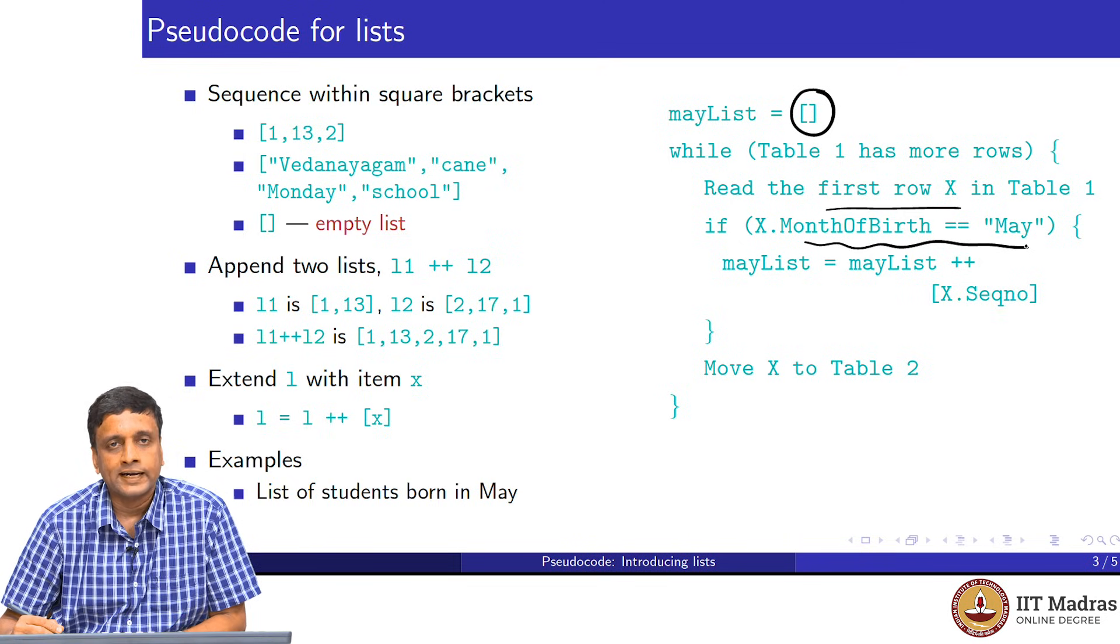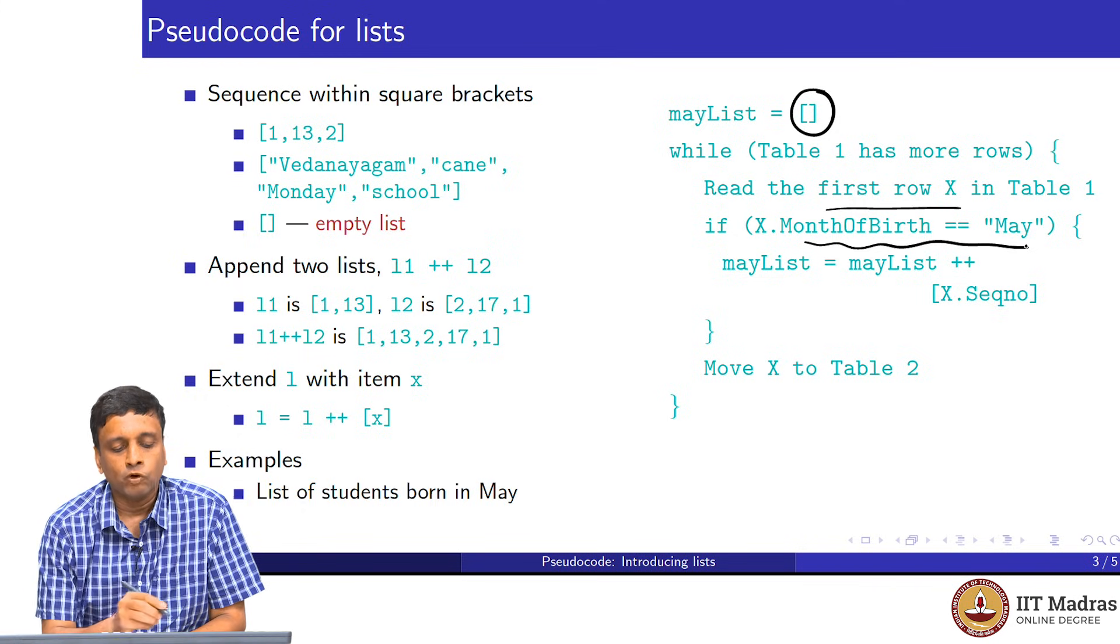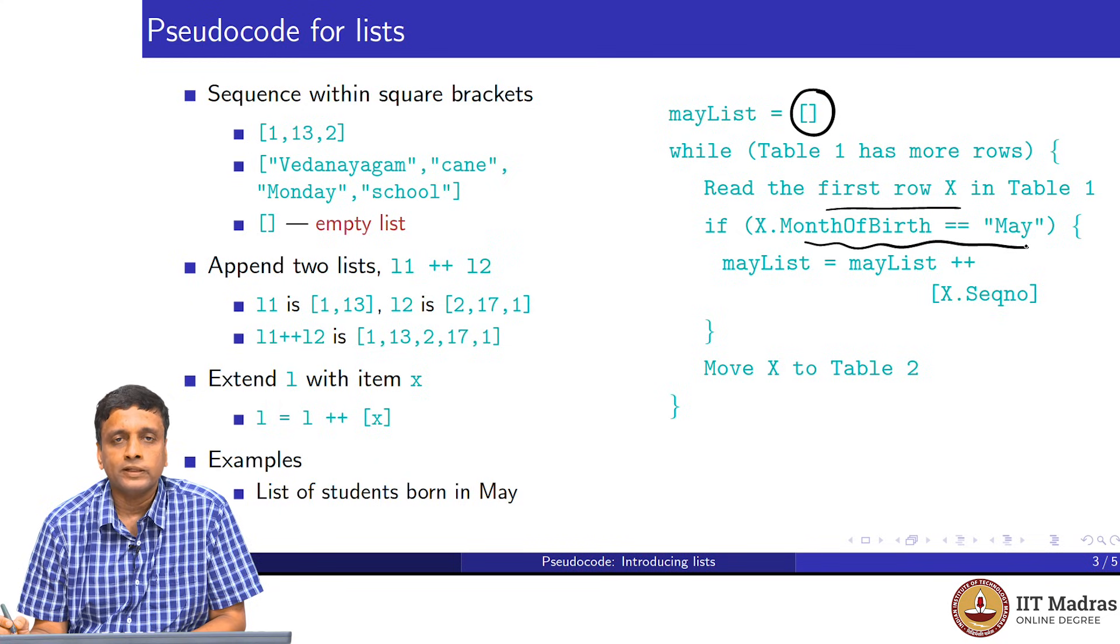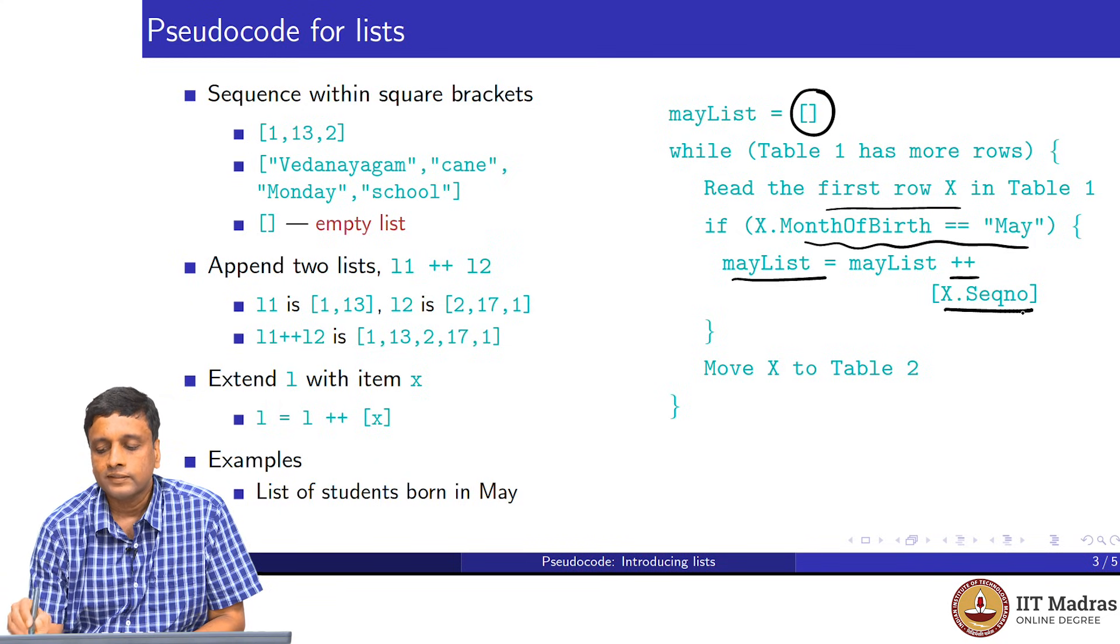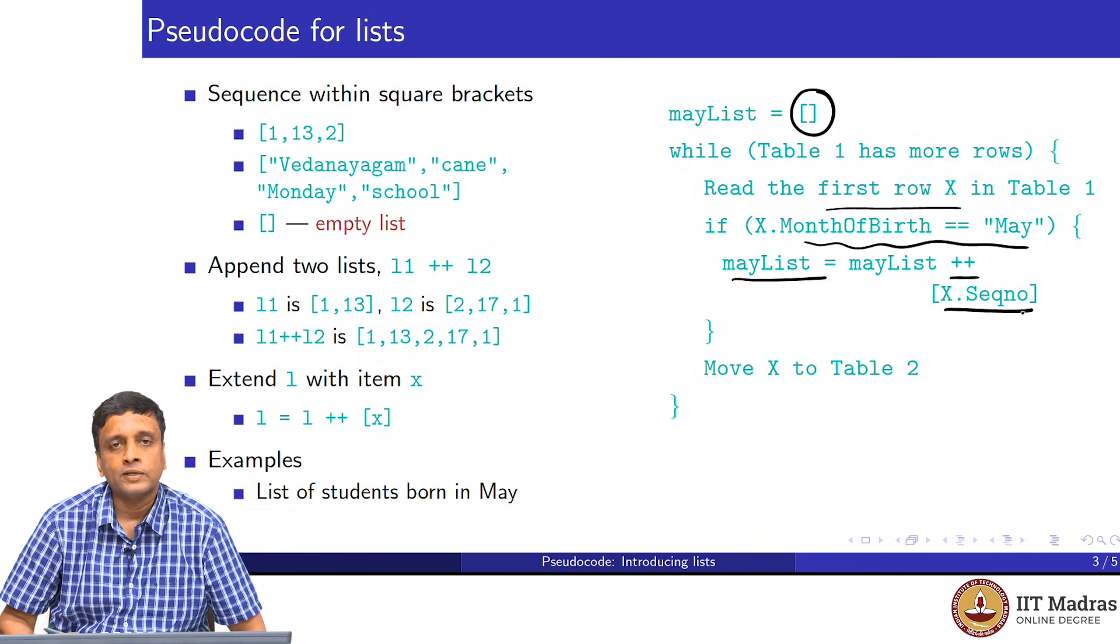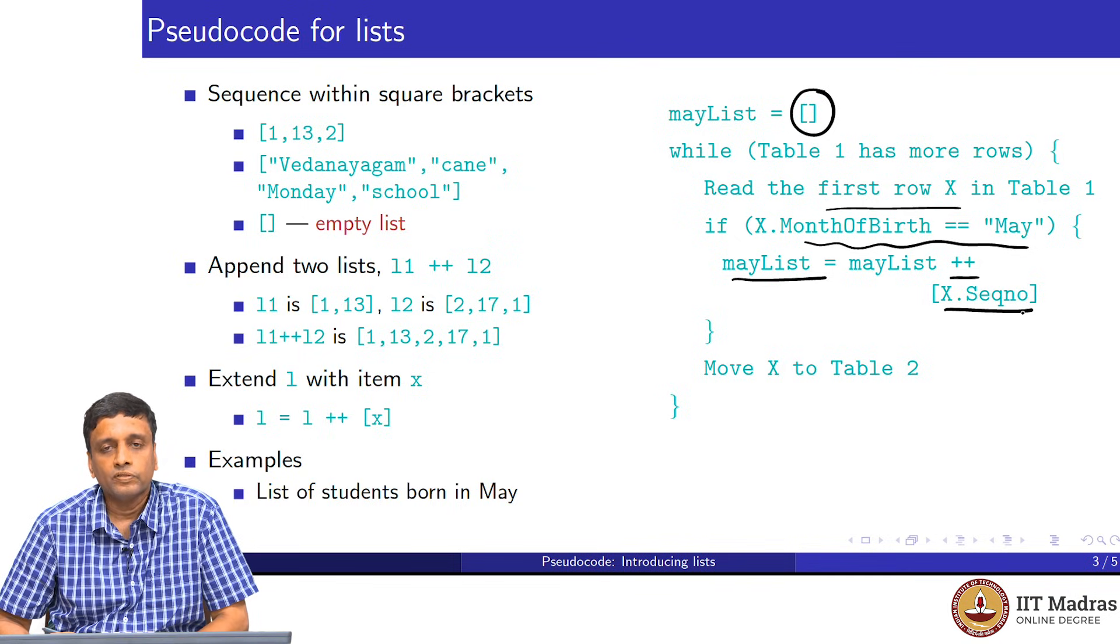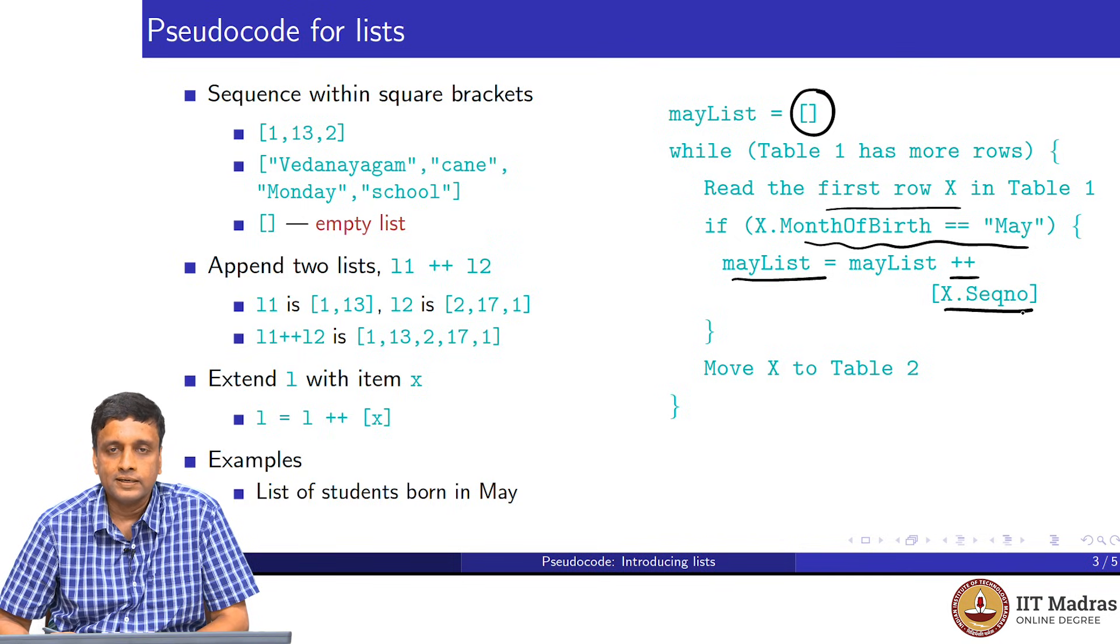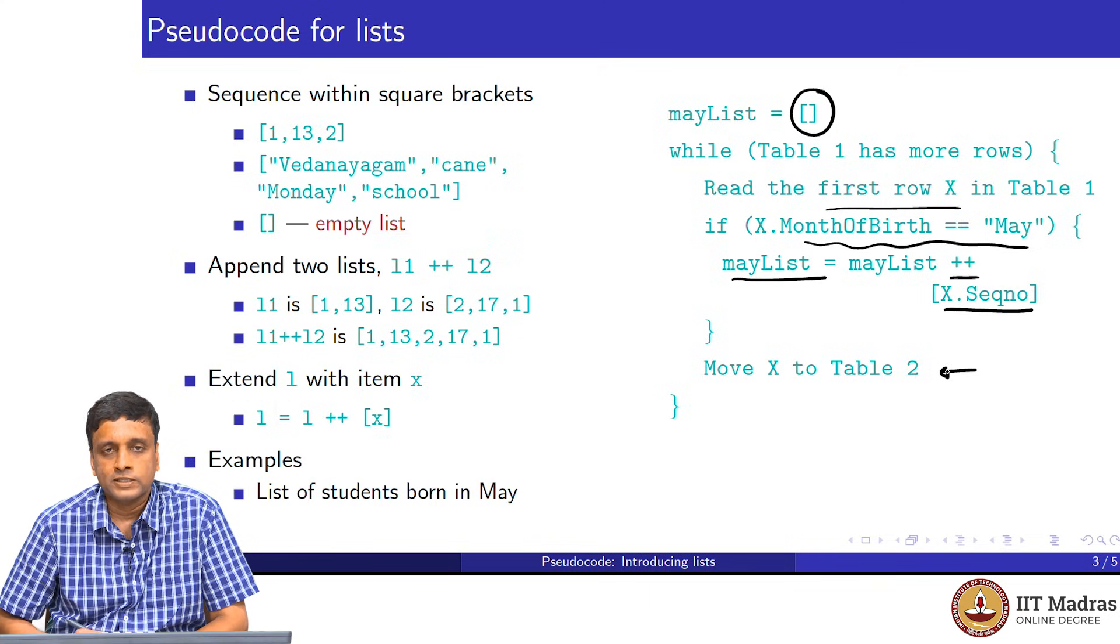We check whether the month in that particular item that we have read corresponds to May or not. We do not really have a field called month of birth in our data. We have date of birth, but let us assume that we can extract the month with this notation. We extract the month of birth and we check if it is May. And if it is May, this is what we said before, we want to extend our May list with this new guy. We have an existing May list and we add to it the sequence number of the current card.